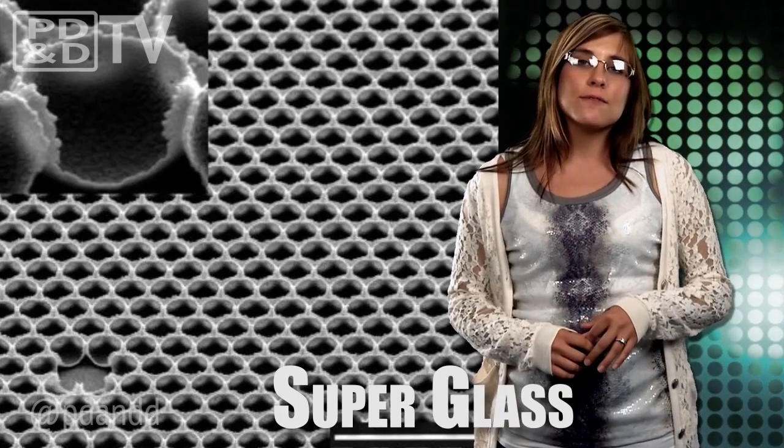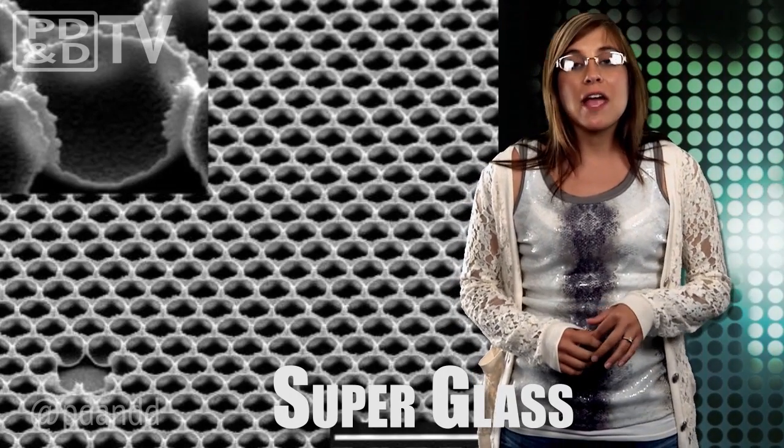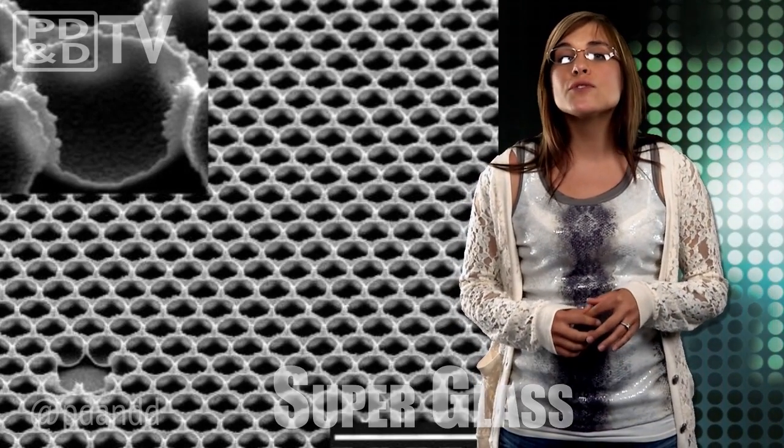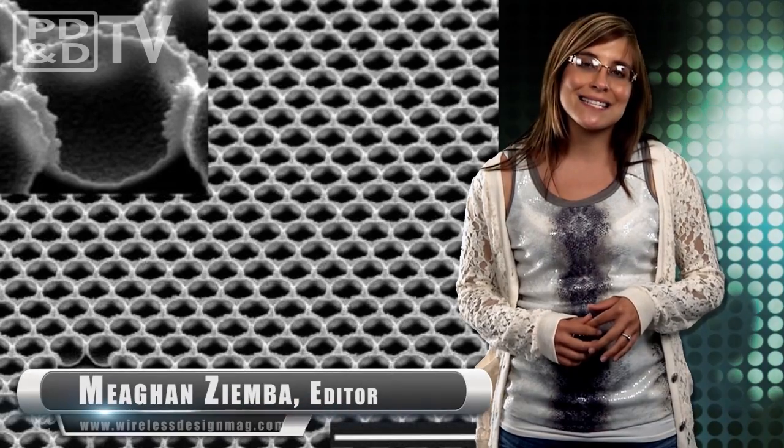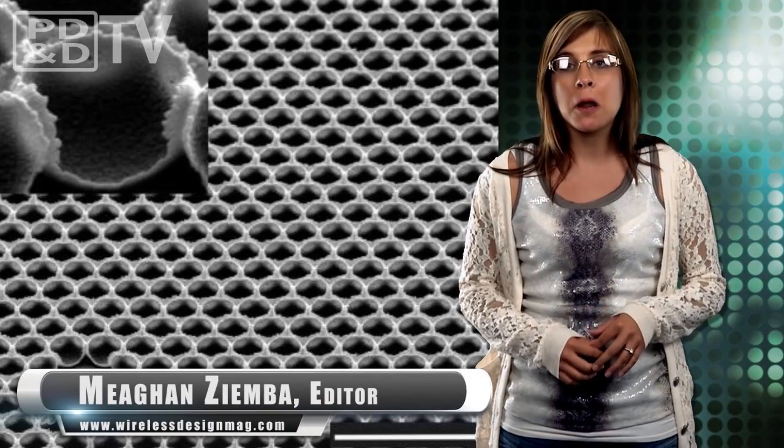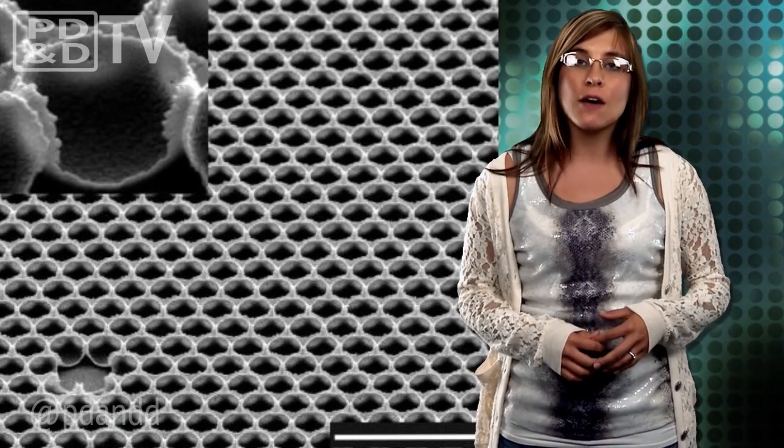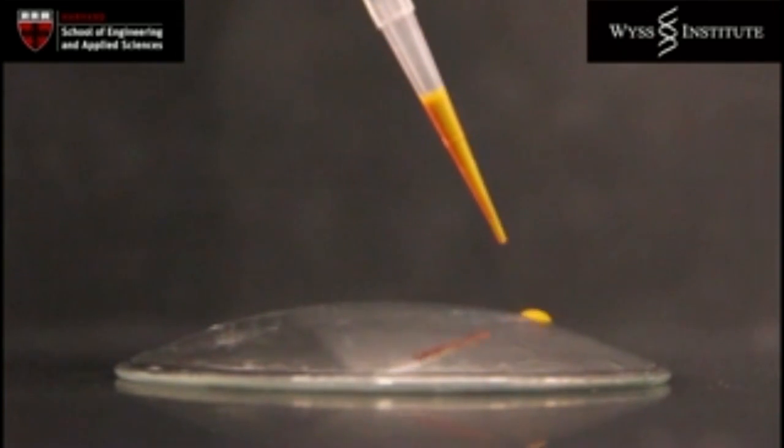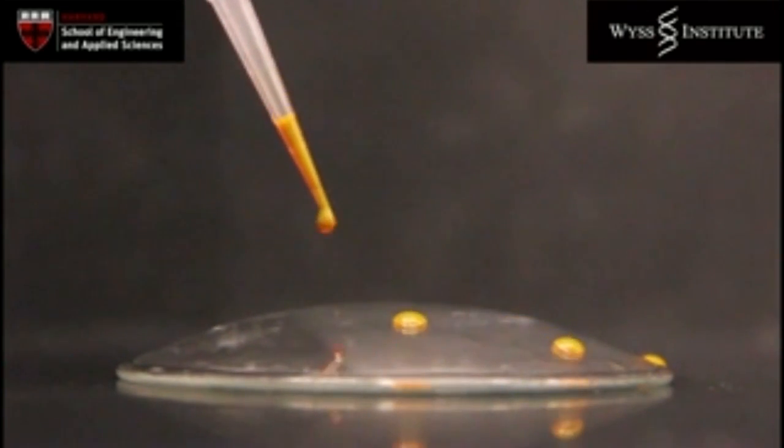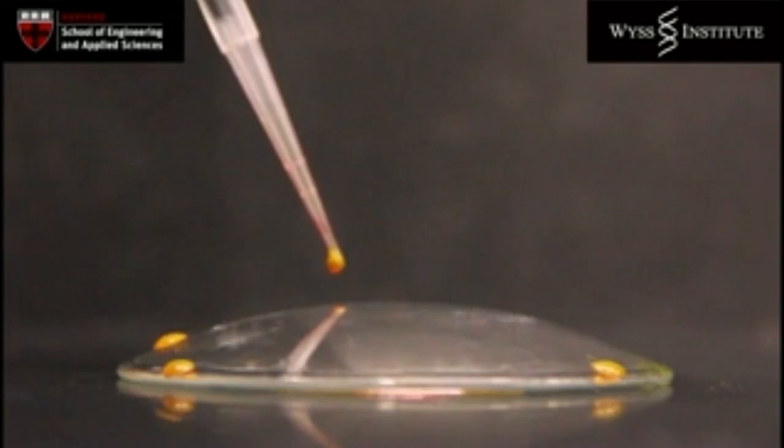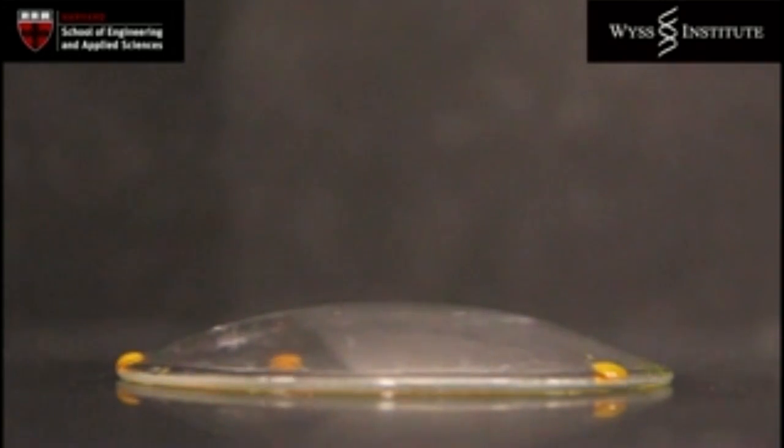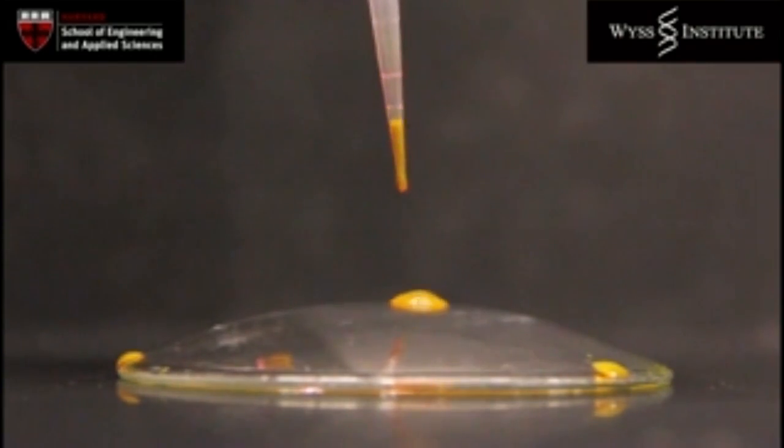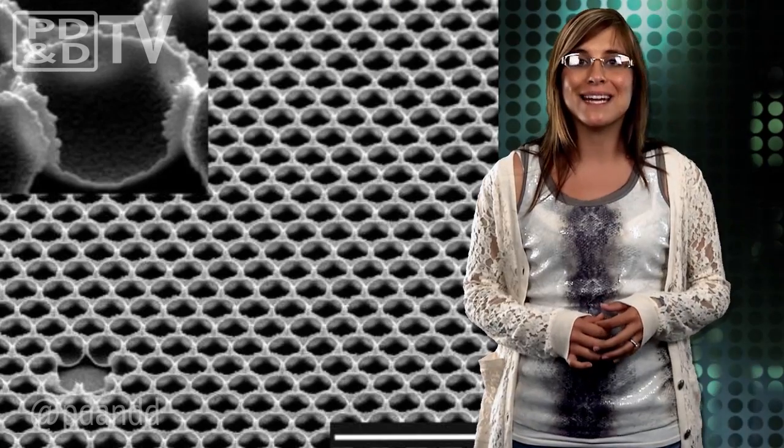A team from the Wyss Institute for Biologically Inspired Engineering at Harvard University and Harvard School of Engineering and Applied Sciences reported a new transparent, bio-inspired coating that makes ordinary glass tough, self-cleaning and incredibly slippery. The new coating builds on a technology called Slippery Liquid Infused Porous Surfaces or SLIPS and could be used to create durable, scratch-resistant lenses for eyeglasses, self-cleaning windows, improved solar panels and new medical diagnostic devices.